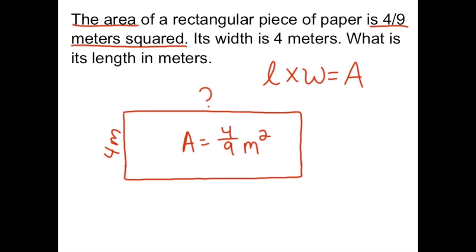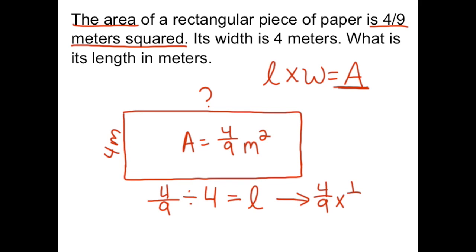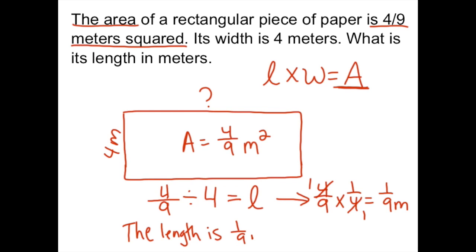To find the length, we're going to take our area, four-ninths, and divide that by four to find the length, which is unknown. So now I'm going to rewrite this to solve: four-ninths times one over four. I can cross-cancel and I end up with one-ninth meter. So the length is one-ninth meter.